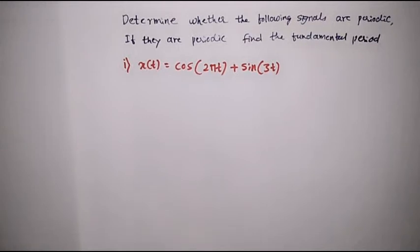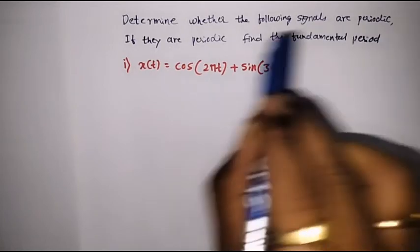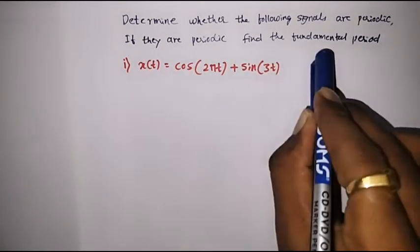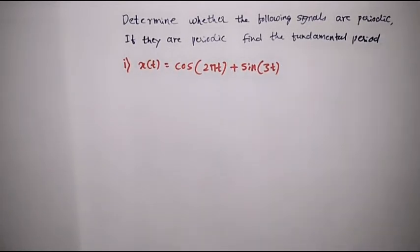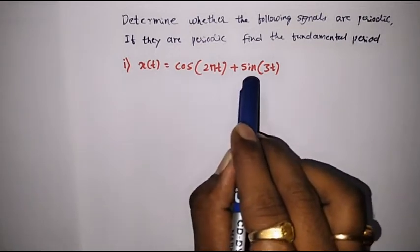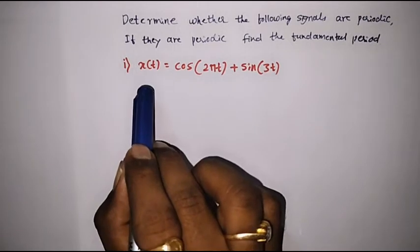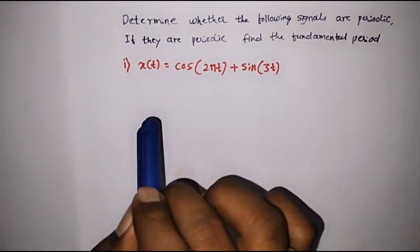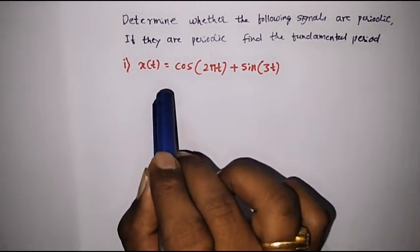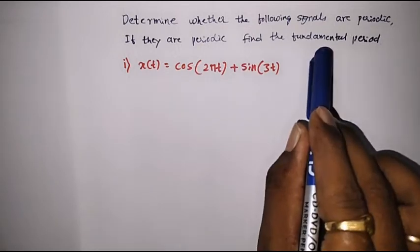Let us take one example to verify periodicity of a signal. Determine whether the following signals are periodic. If they are periodic, find the fundamental period. Here x(t) is equal to cos(2πt) plus sin(3t). So x(t) is a sum of two signals. We are supposed to verify whether the signal is periodic or not. If it is periodic, we are supposed to calculate the fundamental period.